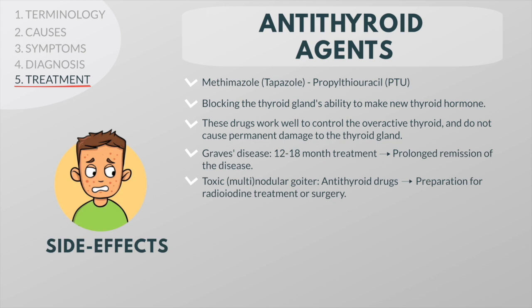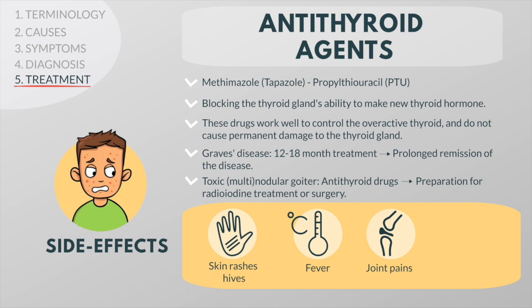Anti-thyroid drugs cause allergic reactions in about 5% of patients who take them. Common minor reactions are red skin rashes, hives and occasionally fever and joint pains. A rarer but more serious side effect is a decrease in the number of white blood cells. If your patient develops a fever, they should stop the drug immediately and have a white blood cell count that day. If they continue to take the drug despite a low white blood cell count, there's a risk of a more serious, even life-threatening infection.